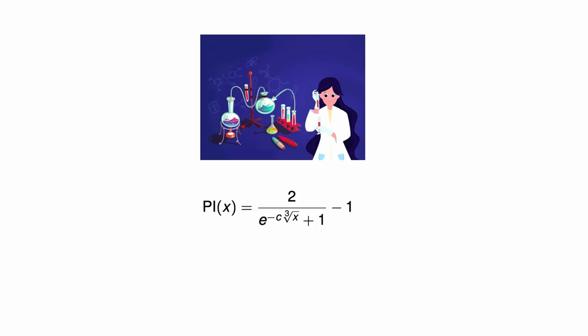The point is that it has a slower growth, so it's called a sub-exponential formula. You can see that e is raised to the power of not x but the cubic root of x. This function grows significantly slower than a true exponential. The constant c varies very little, from 2.33 to 0.61, and it does so very slowly.